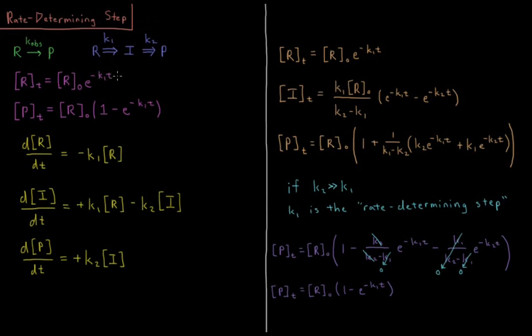the initial concentration of the reactant times e to the minus k observed t, and the concentration of the product as a function of t, if we start off with initial reactant concentration of r0 and the initial concentration of p is zero, we have p of t equals r0 times 1 minus e to the minus k observed times t.